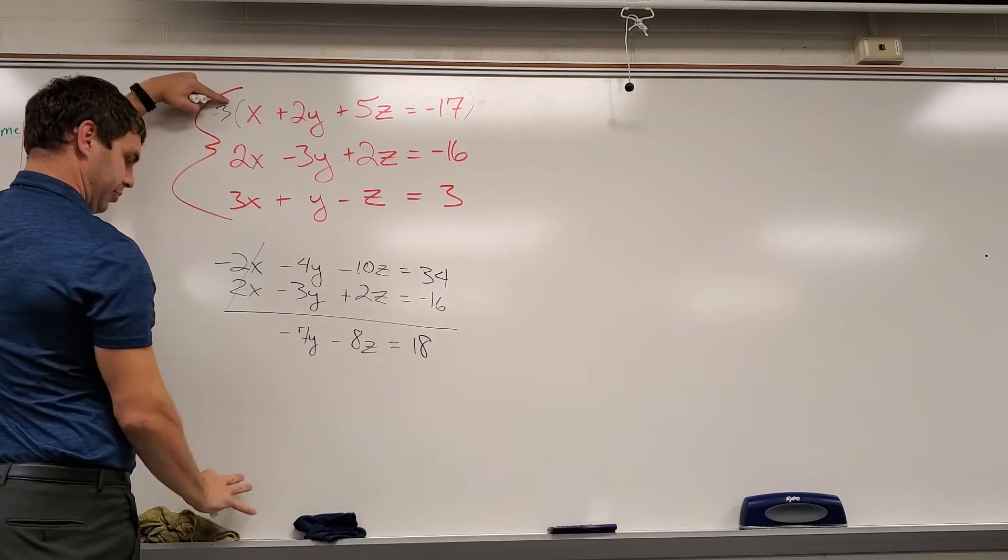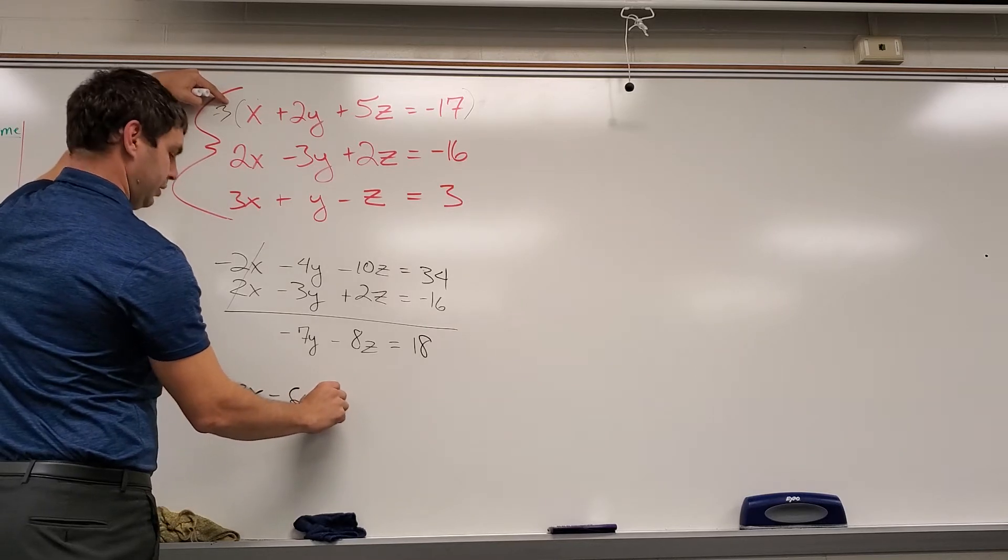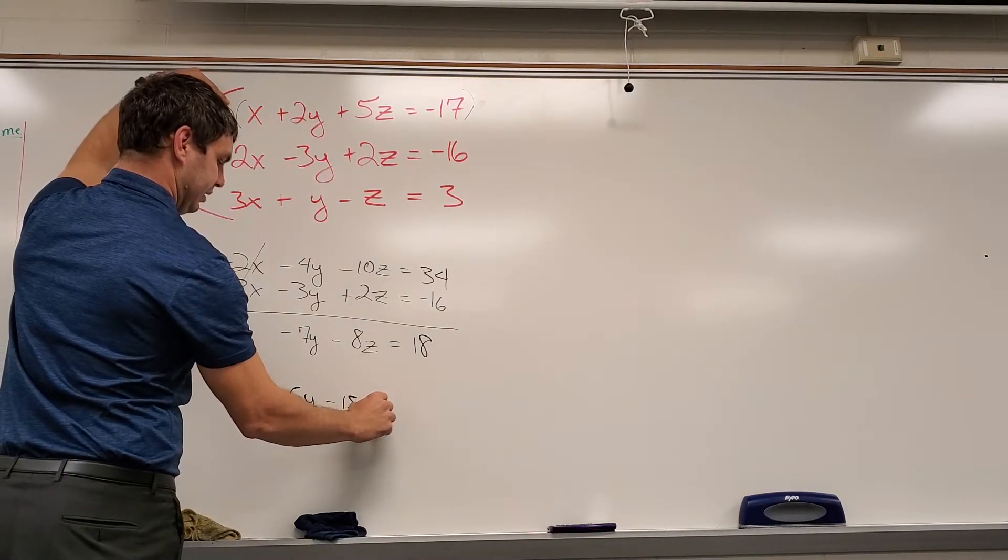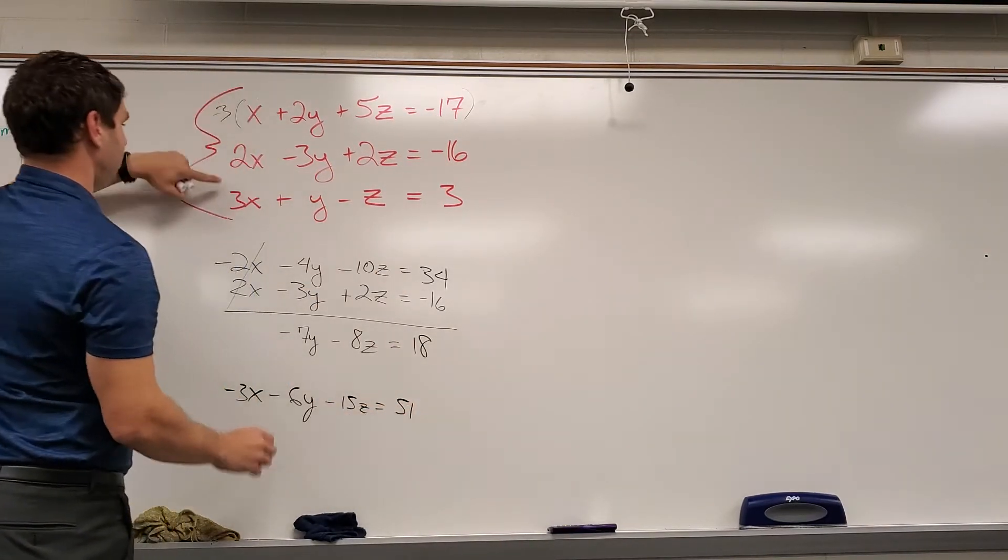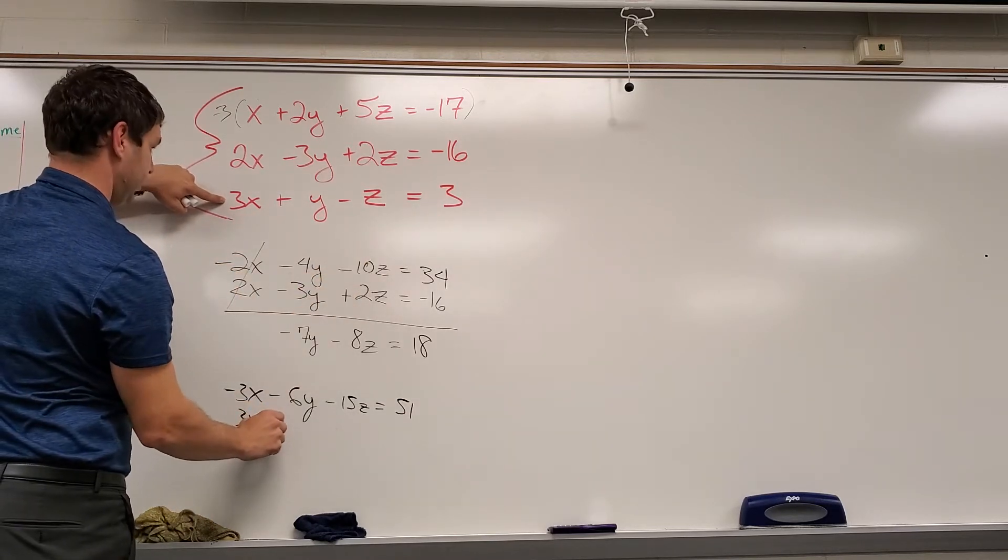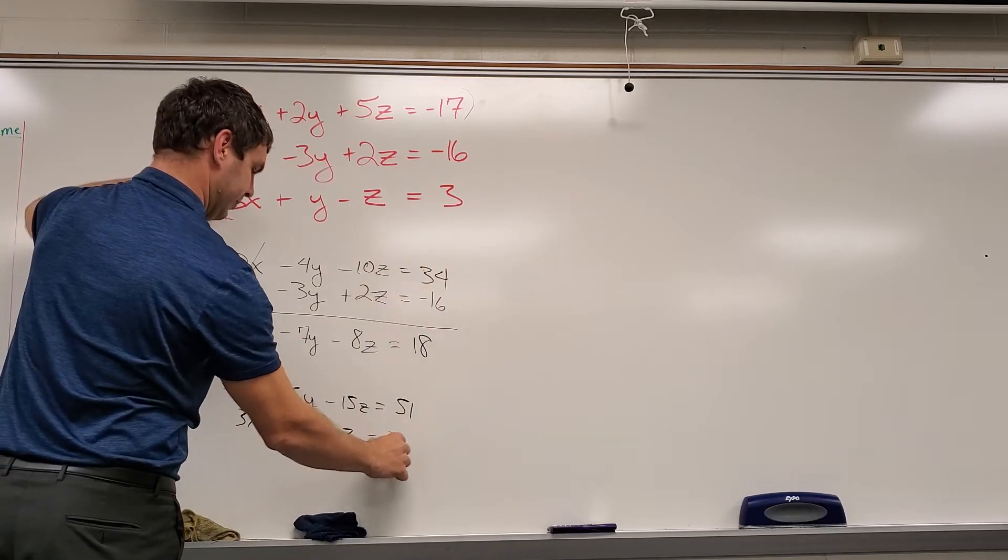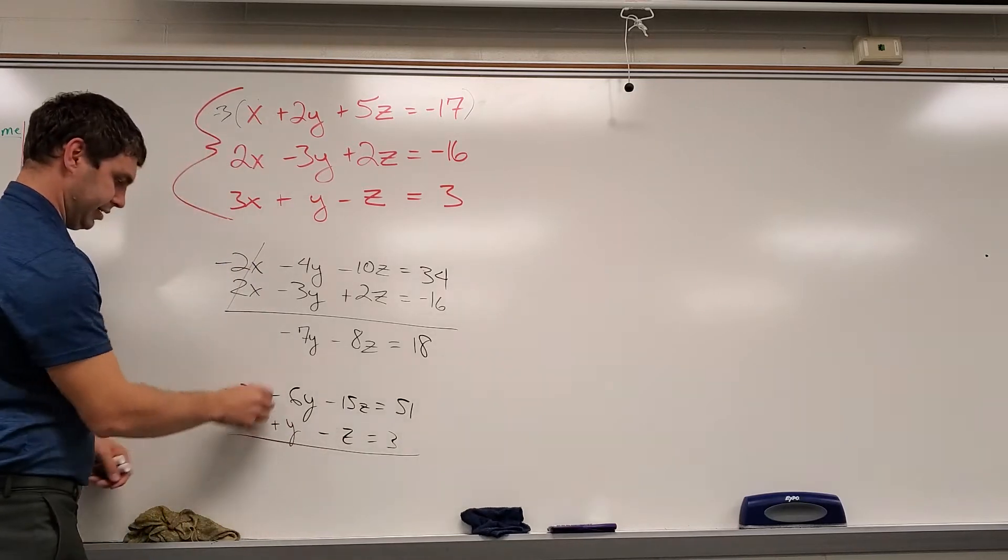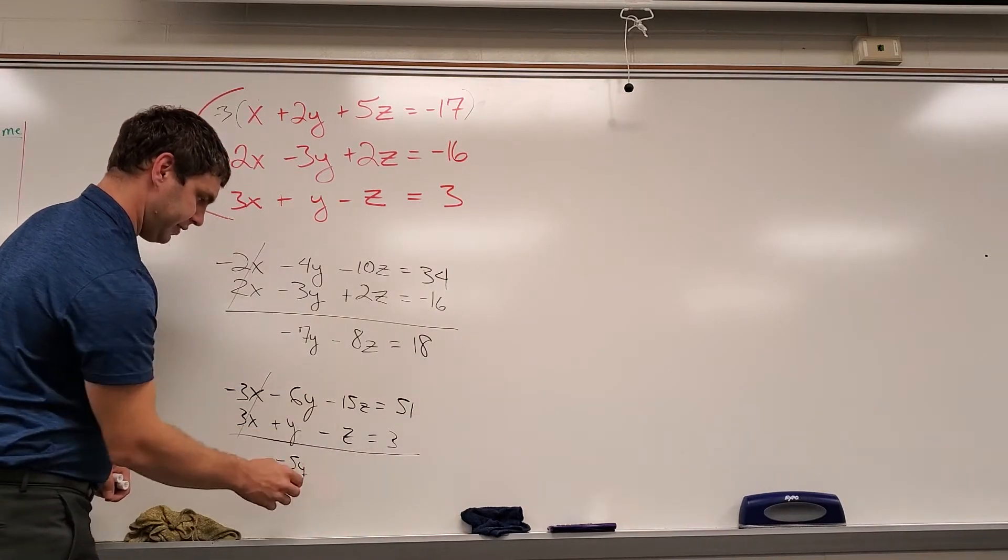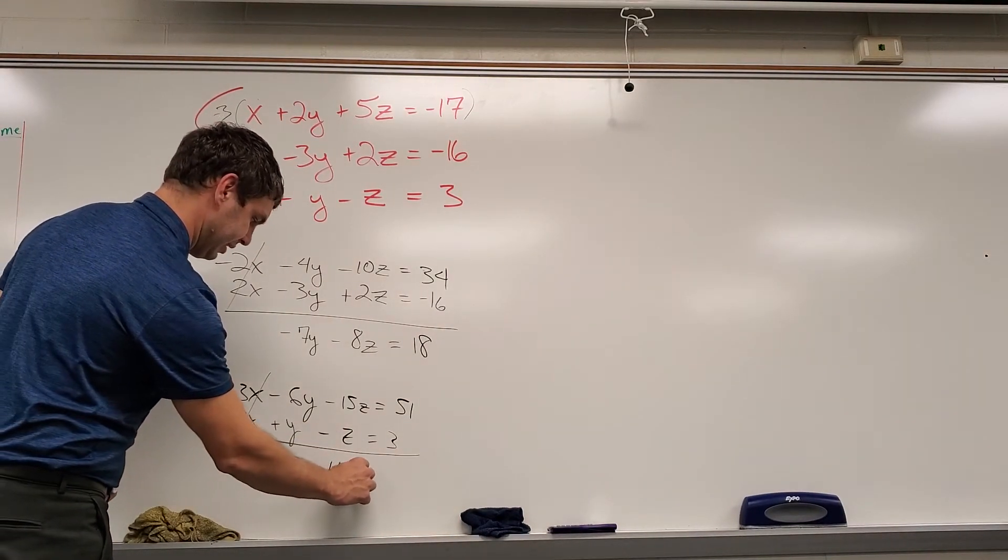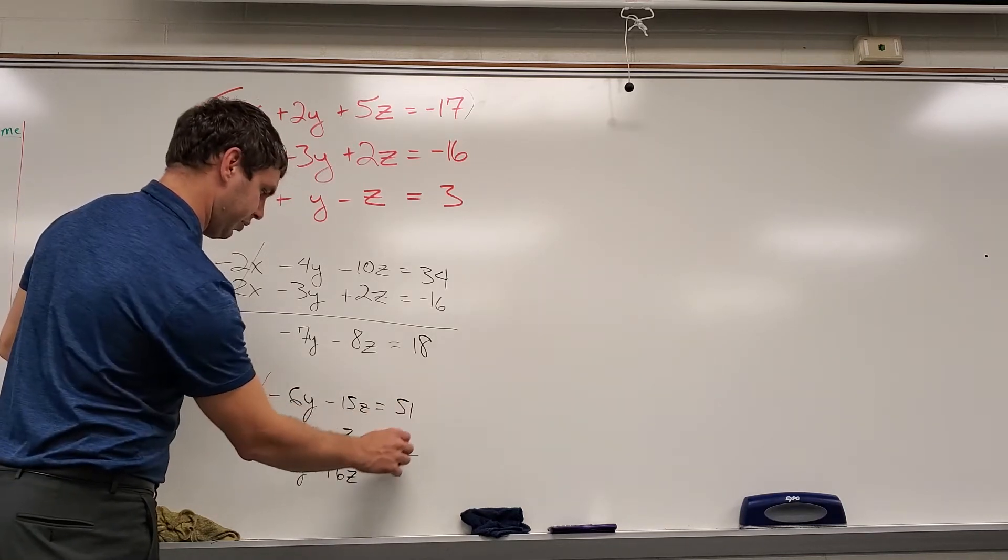Let's do the top one. I'm just going to do it right below. So that's negative 3x minus 6y minus 15z equals negative 3 times negative 17 is 51. And then just rewrite the bottom one, 3x plus y minus z equals 3. So again, if I add these together, the x's cancel. Negative 6y plus y is negative 5y. Negative 15z minus z is negative 16z. And then 51 plus 3 is 54.